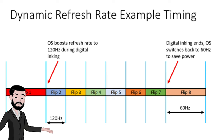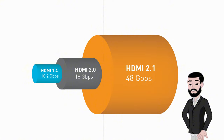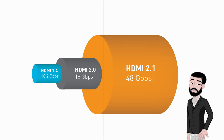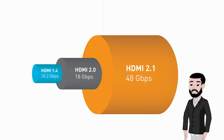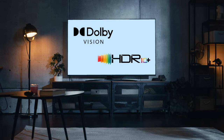HDMI 2.1 has a maximum bandwidth of up to 48 gigabits, significantly higher than HDMI 2.0's 18 gigabits, but it requires new ultra-high-speed HDMI cables to achieve maximum bandwidth. Just like DisplayPort 1.4, HDMI 2.1 supports HDR and dynamic HDR formats like HDR10+, Dolby Vision, and others.